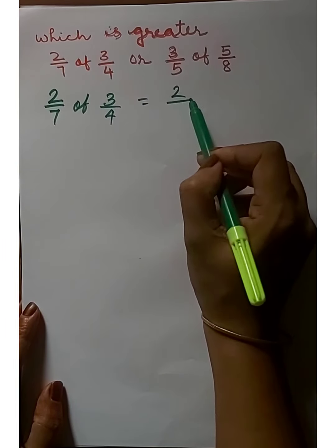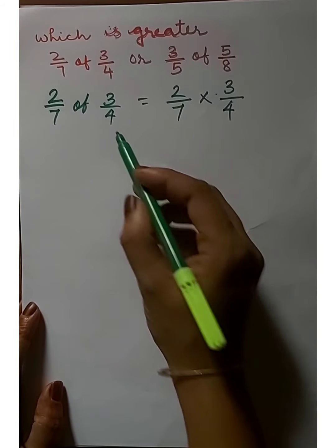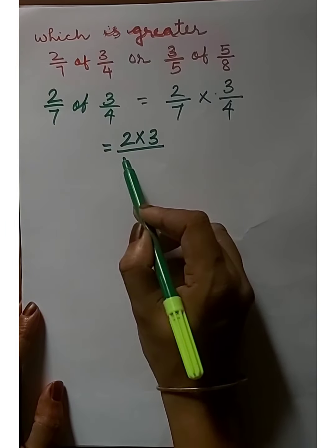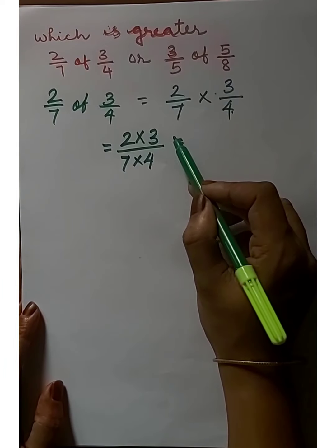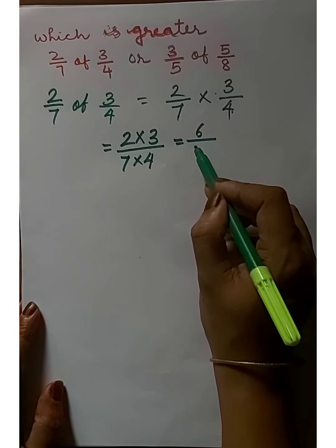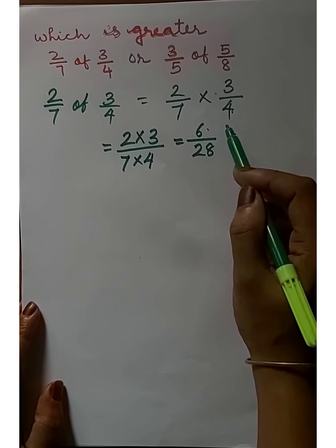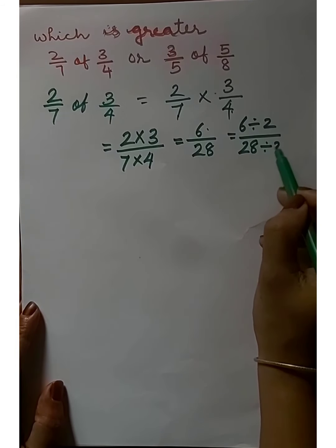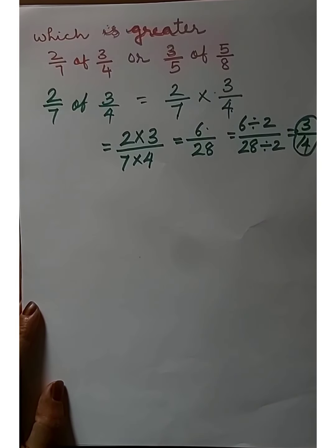That equals 2/7 into 3/4. How to multiply these two fractions? First we find the product of numerators — here numerators are 2 and 3. Next, we find the product of denominators — here denominators are 7 and 4. 2 into 3, we get 6; 6 by 7 into 4, we get 28. Here numerator and denominator are even numbers, so we simplify: 6 divided by 2 is 3, and 28 divided by 2 is 14. We get the fraction 3/14.